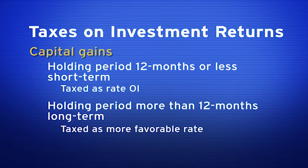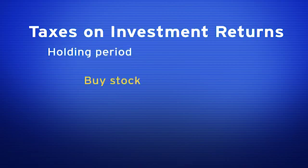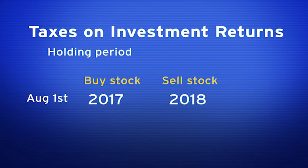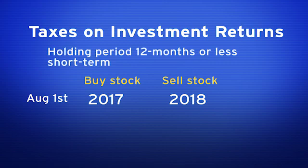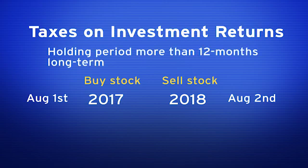So if I'm in the 30% marginal tax rate, short term gains are taxed at 30%, while long term gains would be taxed at a more favorable, lower tax rate. Let's explore holding periods. I buy stock on August 1, 2017, and sell it on August 1, 2018 — that is exactly a 12-month holding period, so any gain or loss would be short term. If I bought the stock on August 1, 2017 and sold it on August 2, 2018, that would be a holding period of more than 12 months — 12 months and one day — which would be a long term capital gain or loss.